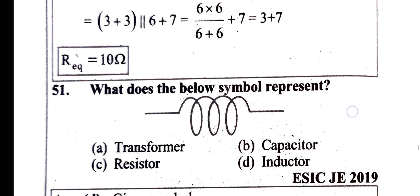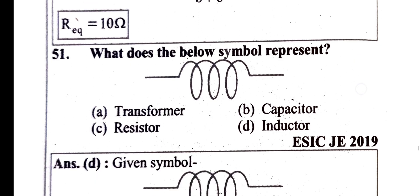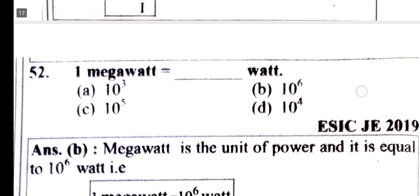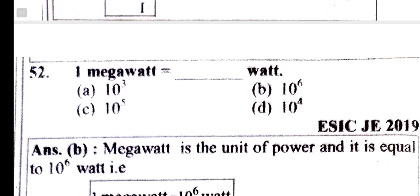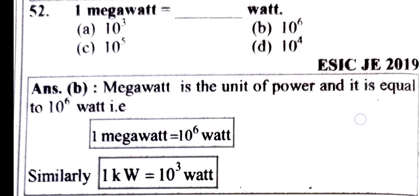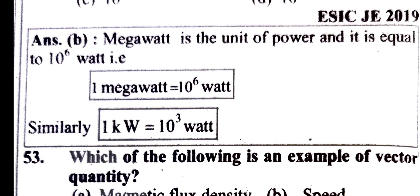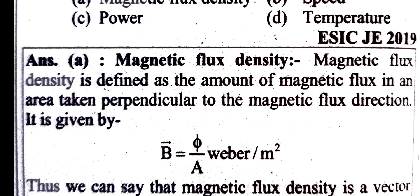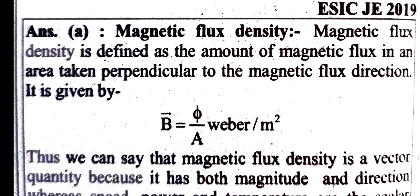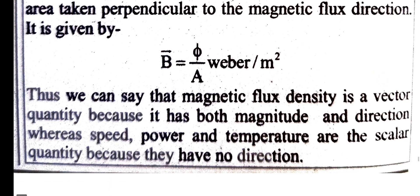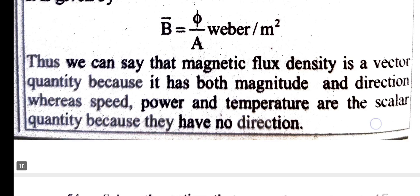What symbol is called? It is option D — inductor. 1 MW equals 10⁶ watt. The following is an example of a vector quantity — magnetic flux density. A vector quantity has both magnitude and direction.